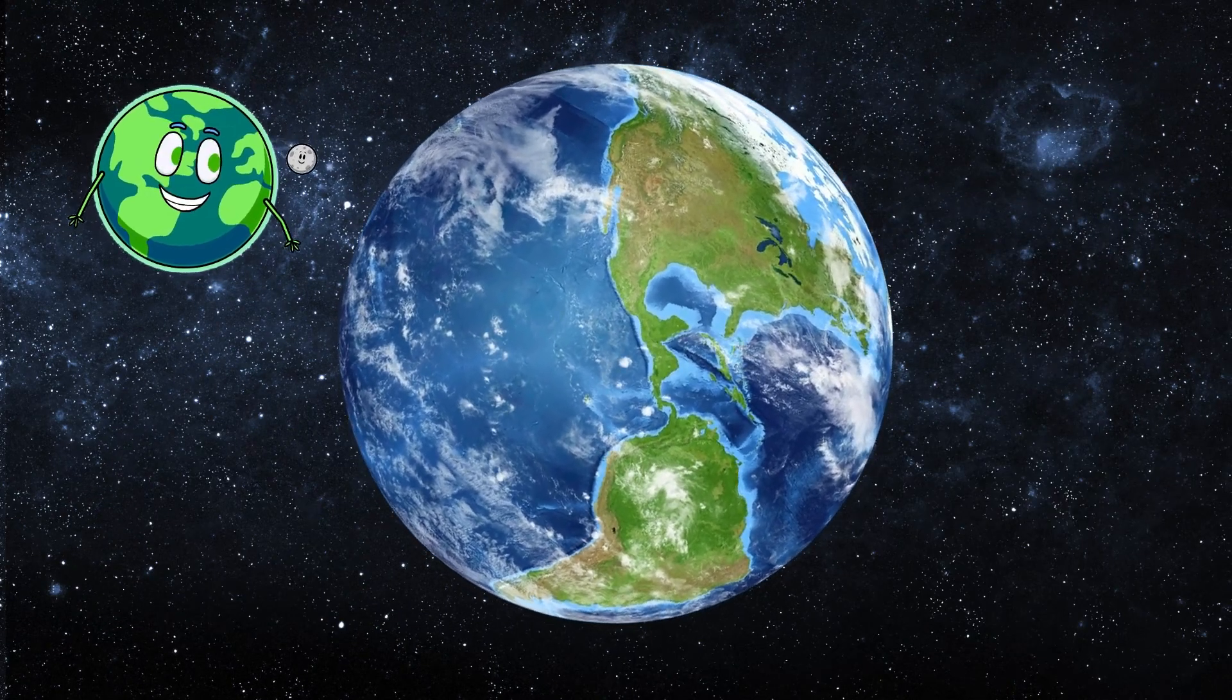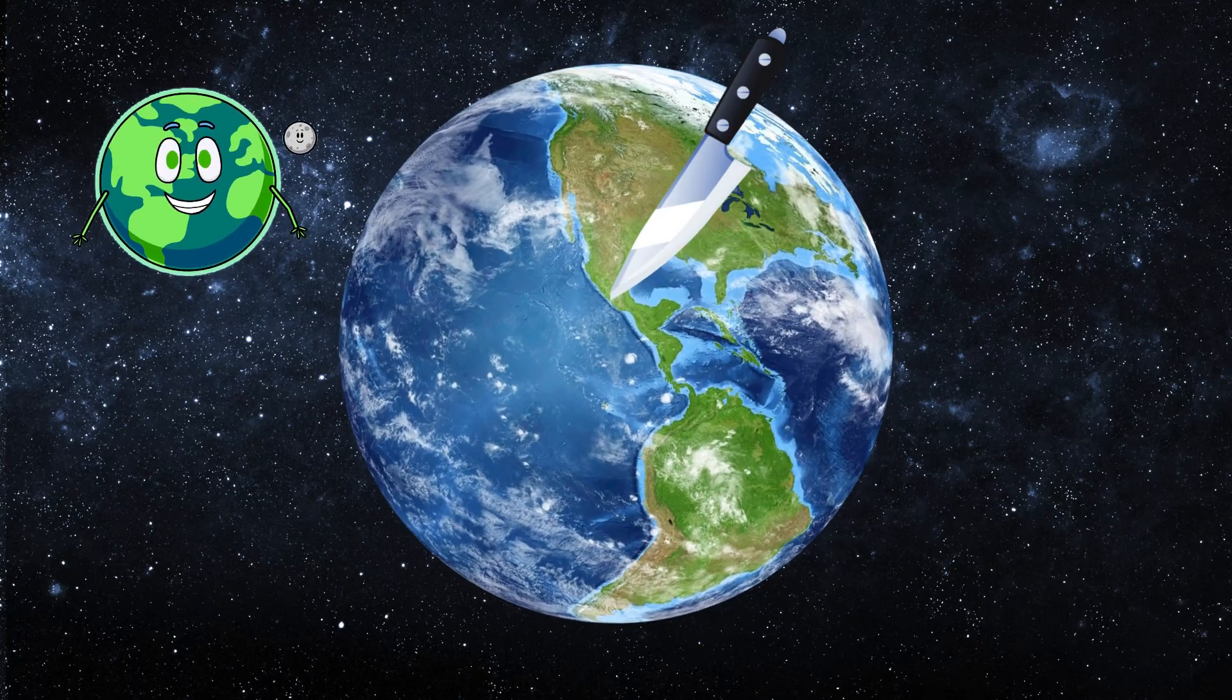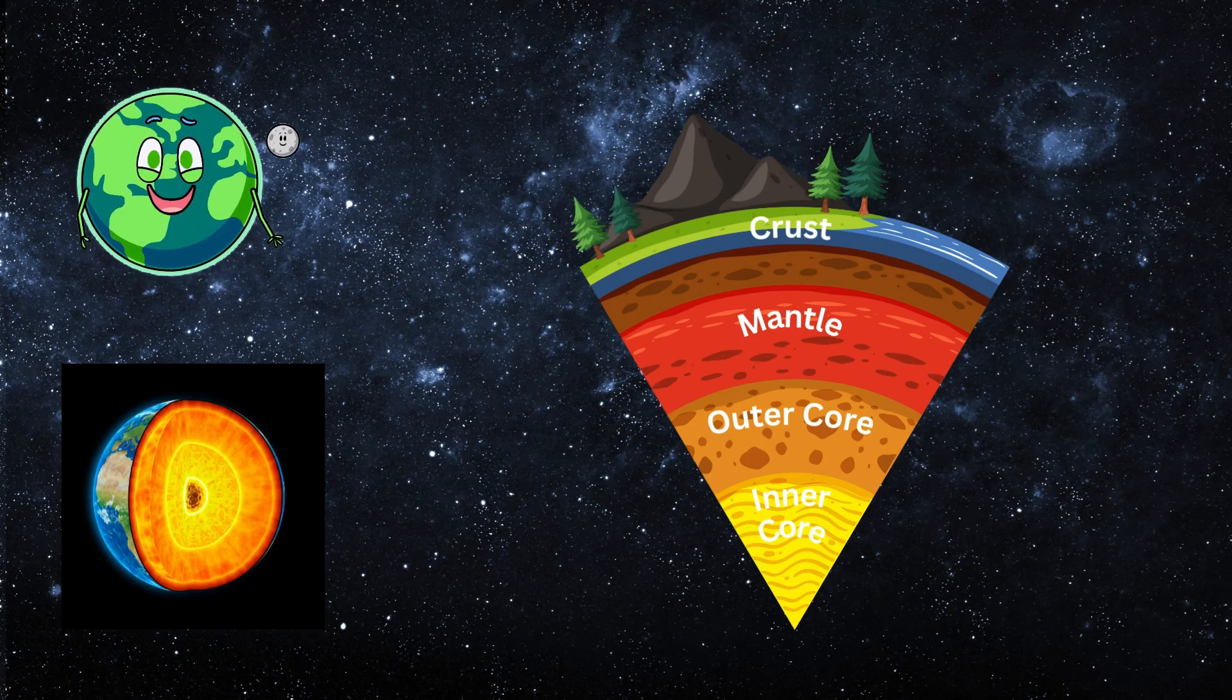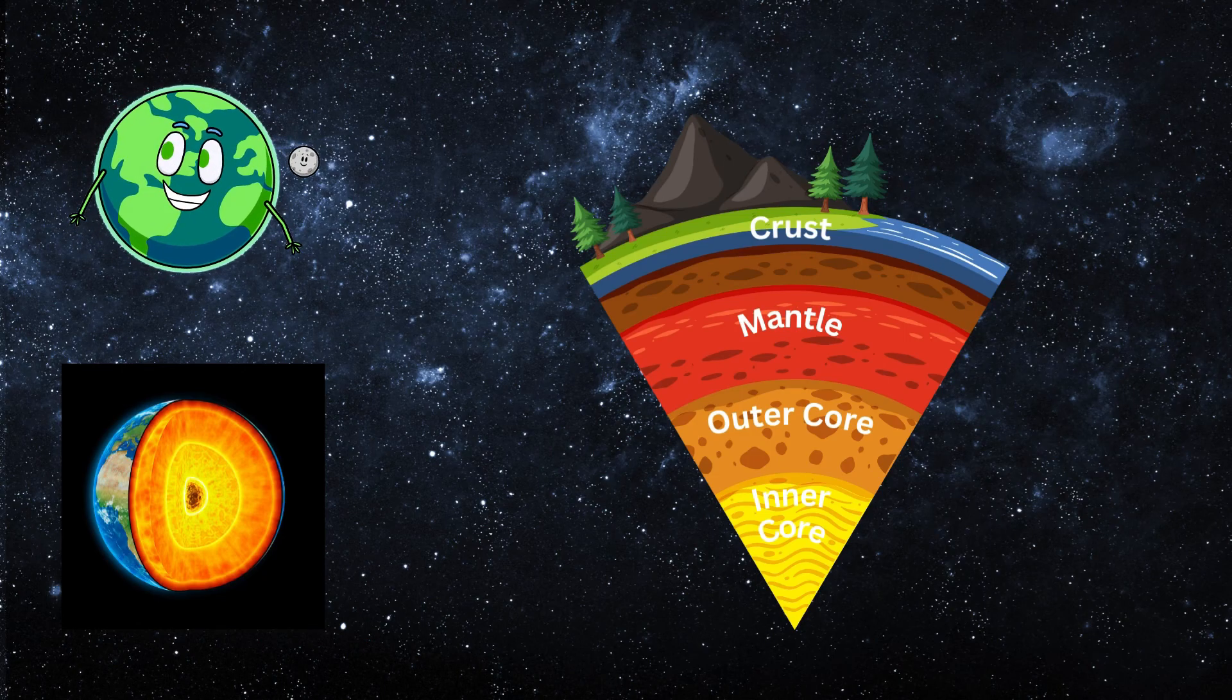Did you know Earth is like a giant layer cake? Let's slice it to see! The crust is the part we live on. The mantle is a hot, rocky layer. It's like Earth's squishy middle.